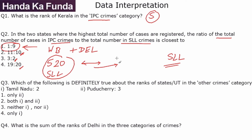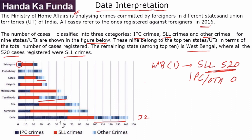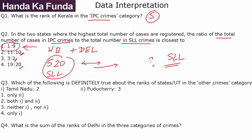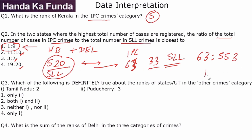To verify: Delhi had around 63 in IPC and around 32 or 33 in SLL. So overall IPC total is 63, and SLL total is 553 (520 plus 33), giving a ratio of roughly 1 to 9. But there was no need to calculate all of this — you could have just seen that West Bengal's 520 SLL cases means SLL crimes are a lot more than IPC, so the first option is clearly the answer.